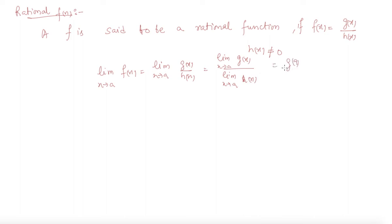This equals g(a) over h(a) from the polynomial functions derivation. This is how we find out these two limits of rational polynomials or rational functions.